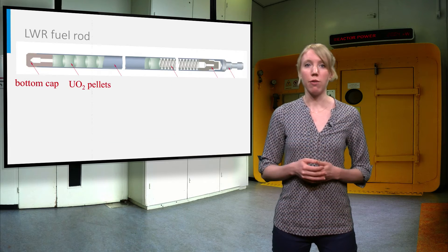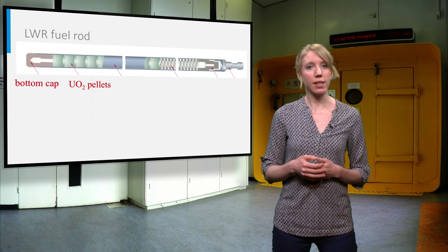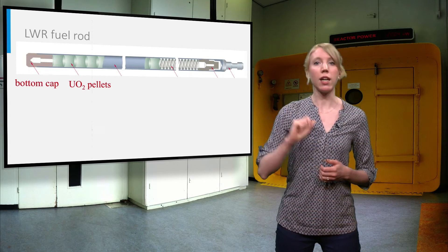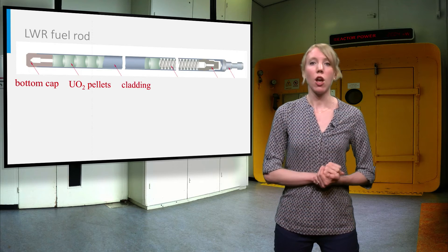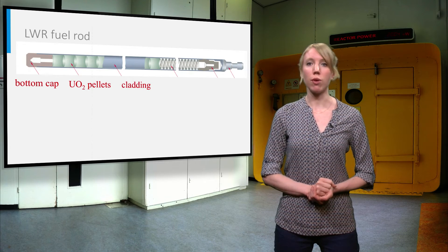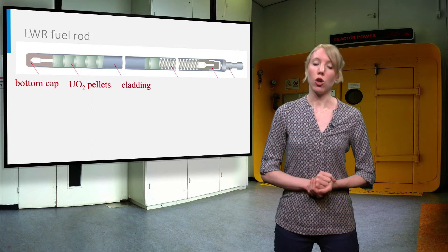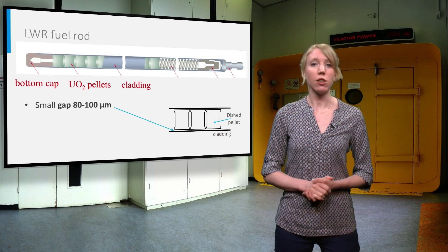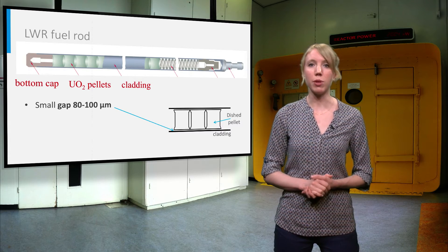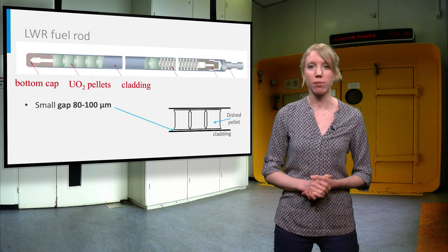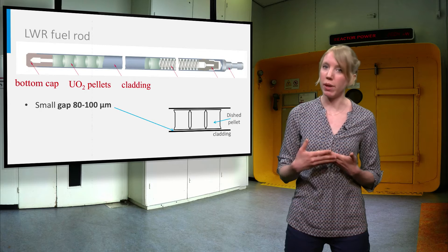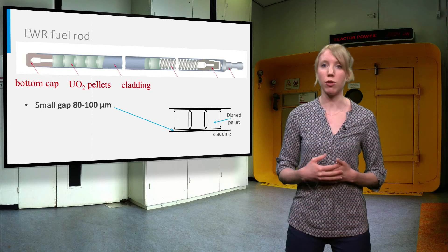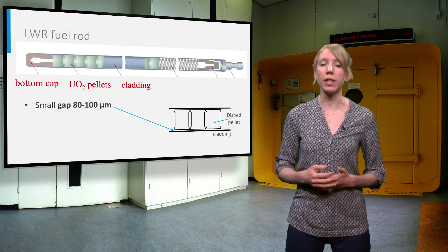In the fuel rod, the uranium dioxide pellets are stacked on top of each other and are enclosed in a metallic structure called the cladding. The cladding isolates the fuel from the coolant. A small gap of about 80-100 micrometers is left between the pellet and the cladding. This gap is needed to facilitate the loading of the pellets and to anticipate the swelling of the pellets during irradiation.